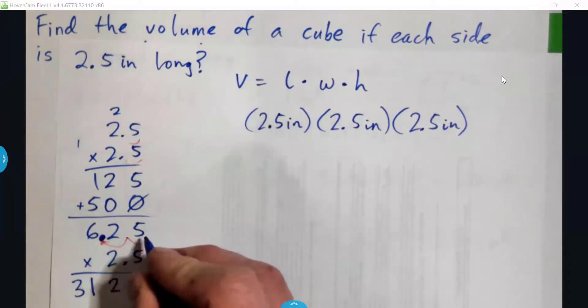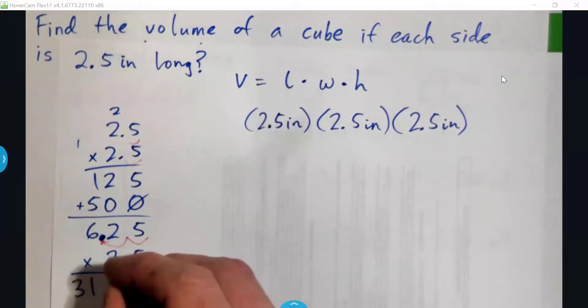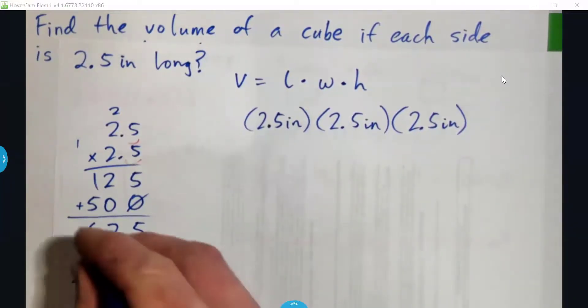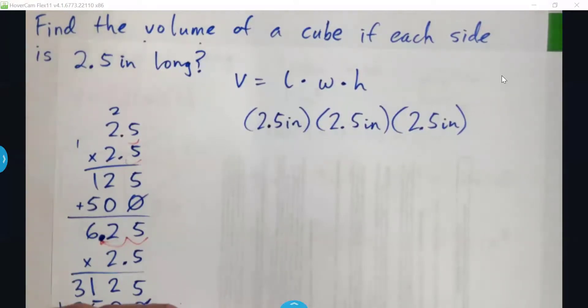Put down a placeholder 0. 2 times 5 is 10, carry 1. 2 times 2 is 4 and 1 is 5. 2 times 6 is 12, and then add. And so 5, 2, 6, 5, 1,